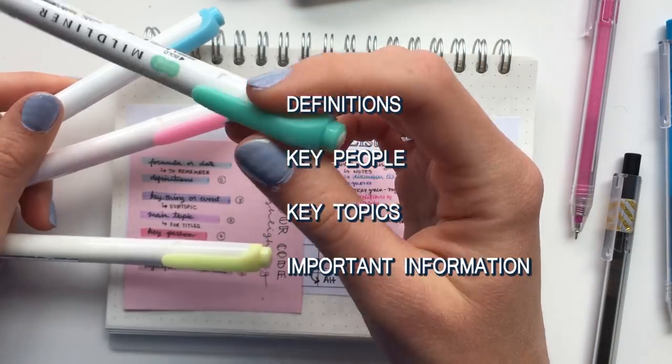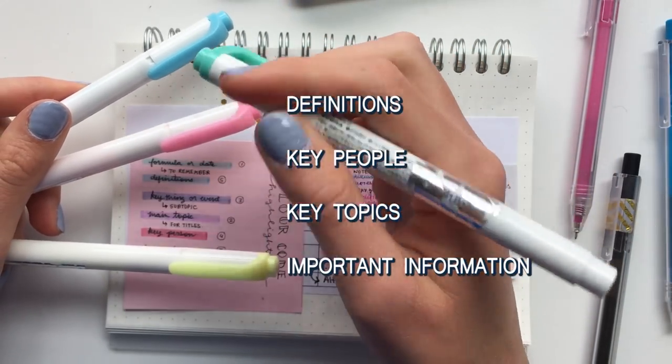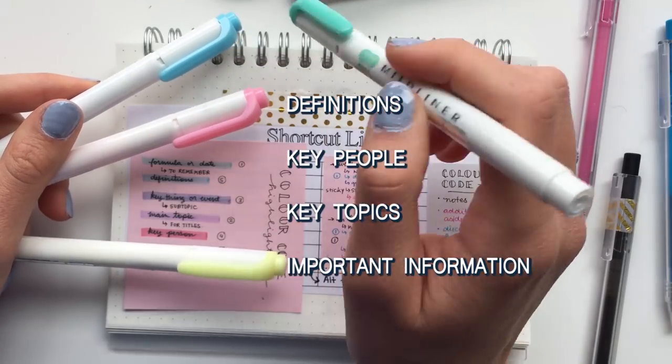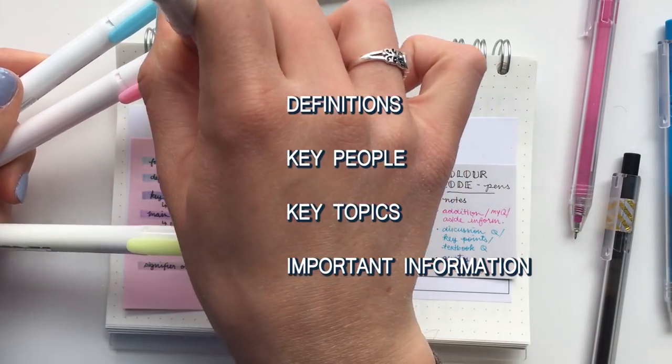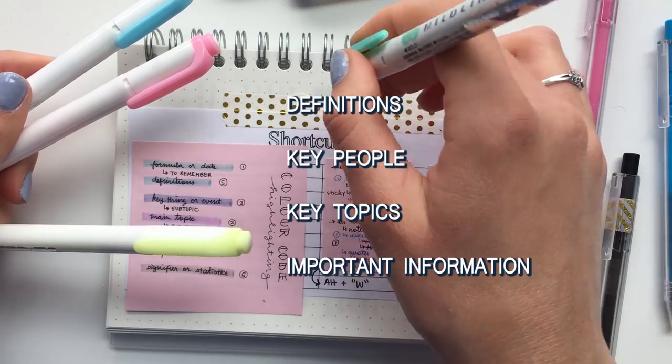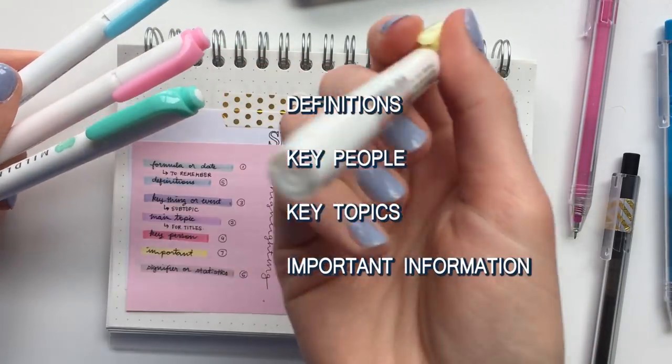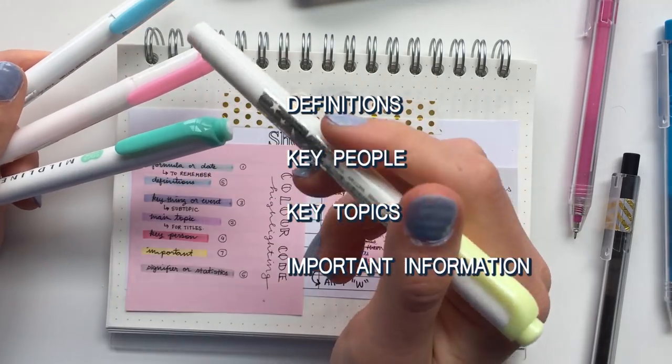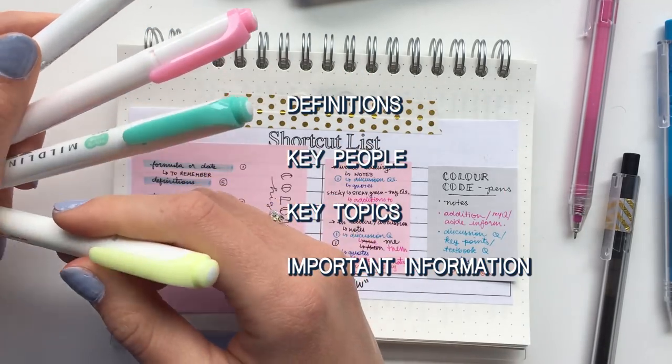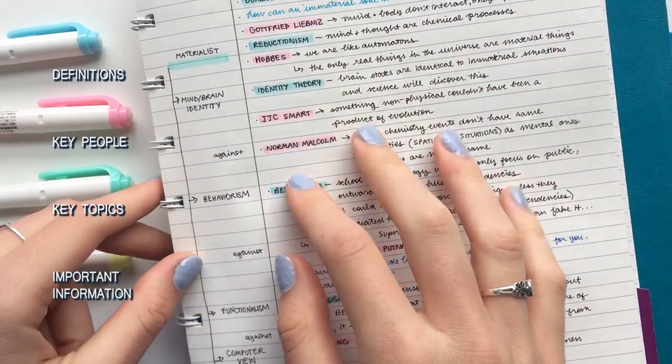The gray... Sorry, the greenish-blue color. I use this for key topics or titles. And I don't actually highlight the words themselves, but I highlight bars on the left and right of the word so that it stands out nicely. And then the yellow is for important information that I want to also stand out. So I'll show you an example in my notes.